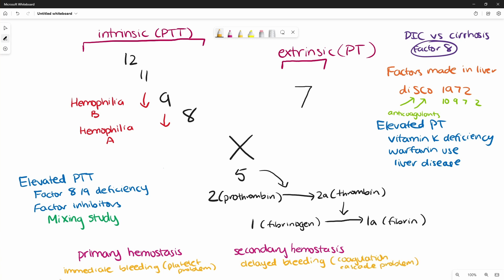So again, just to remember the key points, remember that X marks the spot. Lucky number seven gets its own pathway, which is the extrinsic pathway with an elevation in PT. All of the common pathway is basically your dollar bills. So 10, 5, 2, and 1. And then all of the other numbers will go into the intrinsic pathway, which is an elevation in PTT.